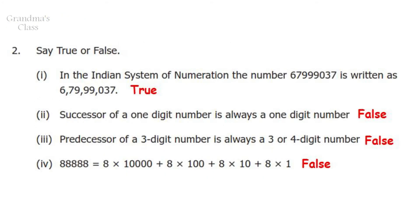Question number 2: Say true or false. In the Indian system of numeration, the number that is given is written as 6 crores, 79 lakhs, 99,037 — which is true. The successor of a 1-digit number is always a 1-digit number. This statement is false because for the number 9, the successor is a 2-digit number.